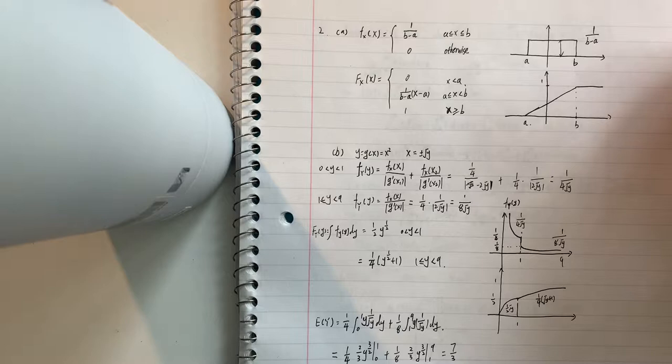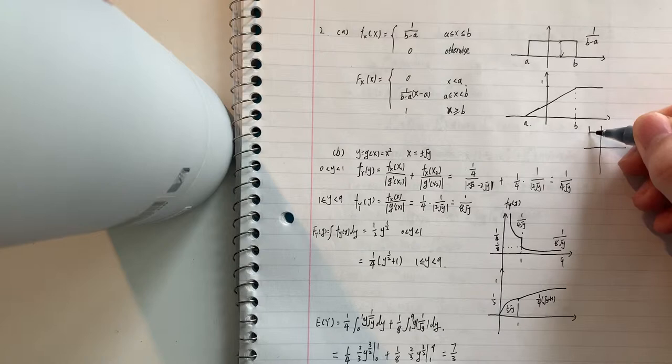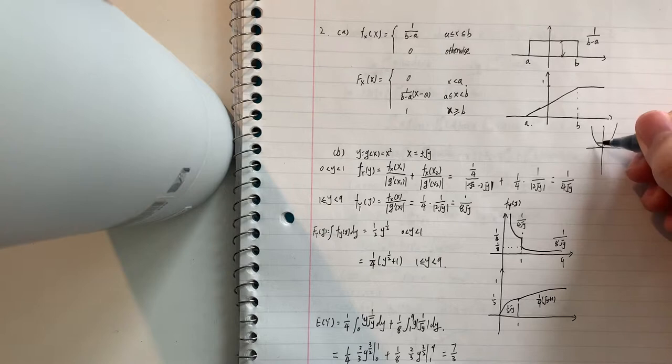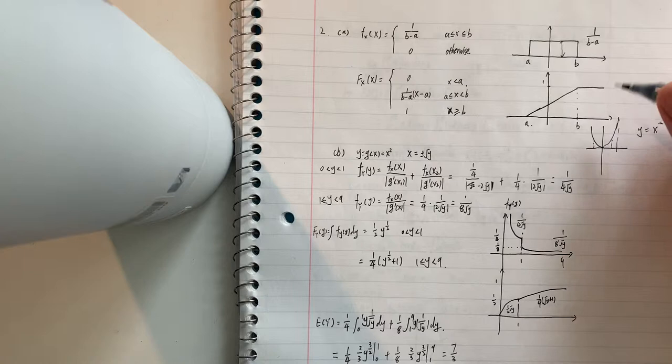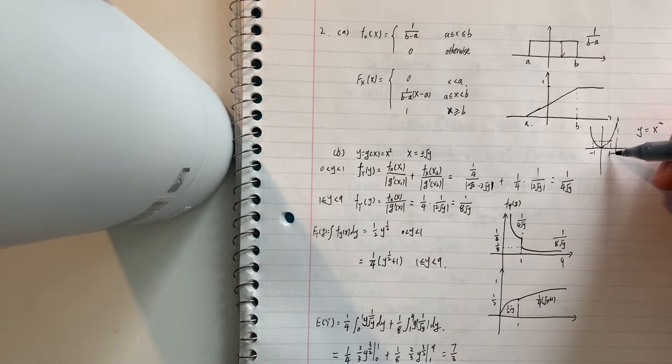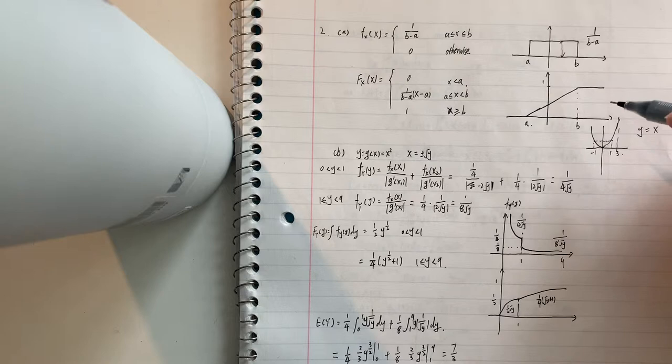First we plug in, we know that y of x is equal to x squared. Then we know that y has the value from 0 to 9, and for x equal to minus 1 to 3, we need to consider this part in two aspects.